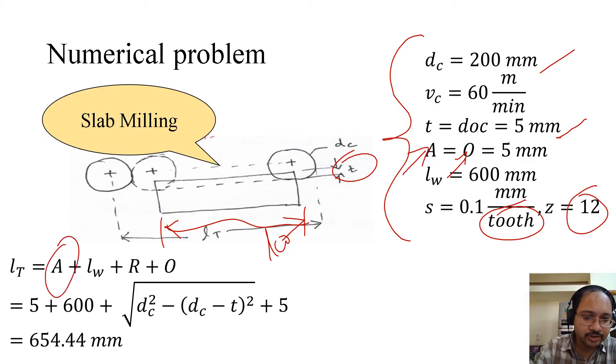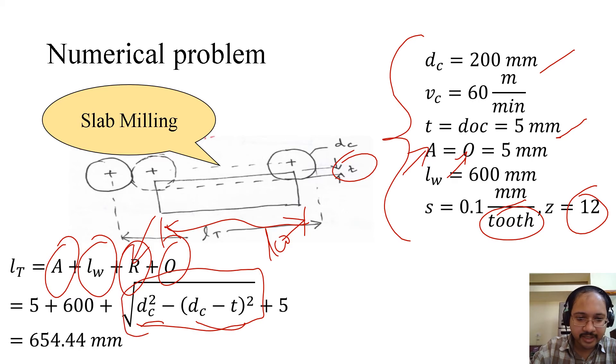So lt is approach plus lw plus R plus O. Because of the geometry of the tool, we also need to take into account R. This is similar to what we have seen in the drilling operation. R is nothing but the square root of dc minus (dc minus t) whole square.